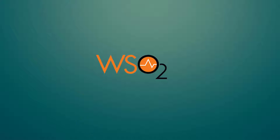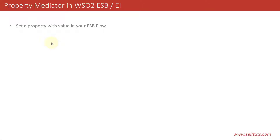In this video we'll see what is Property Mediator. With the Property Mediator, you can set a property with a value in your ESB flow. The whole ESB project has multiple flows — it can go to a different service, bring the response, do modifications or enrichment, and transfer the payload to some other REST endpoint or service. In between all those things, we need some properties that we'll set and access across services. This Property Mediator helps us to set or remove a property from your ESB flow.